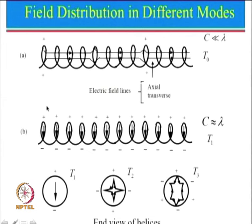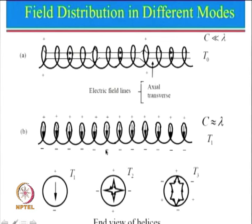All the plus signs are on one side and all the minus signs are on the other side. In reality these pluses and minuses add up and give radiation in the axial direction. We can see one field component here and another field component there, so we can replace one turn with just this particular element. Then we can think of there being an array of these elements, meaning helical antenna can be approximated as an n-element end-fire array.